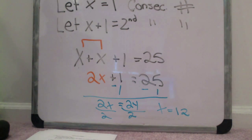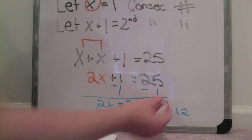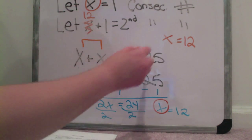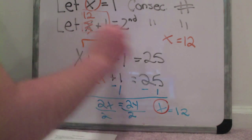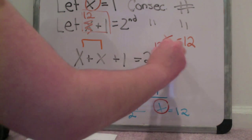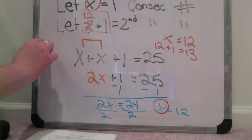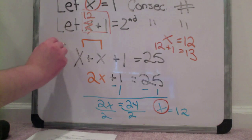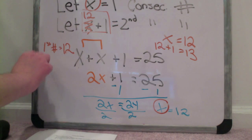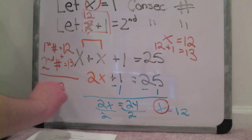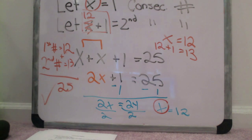So we get x equals 12. Now we have to replace the x's with 12. Our first number is 12, and our second one is 12 plus 1, which equals 13. To check these we add 13 plus 12 and we get 25.